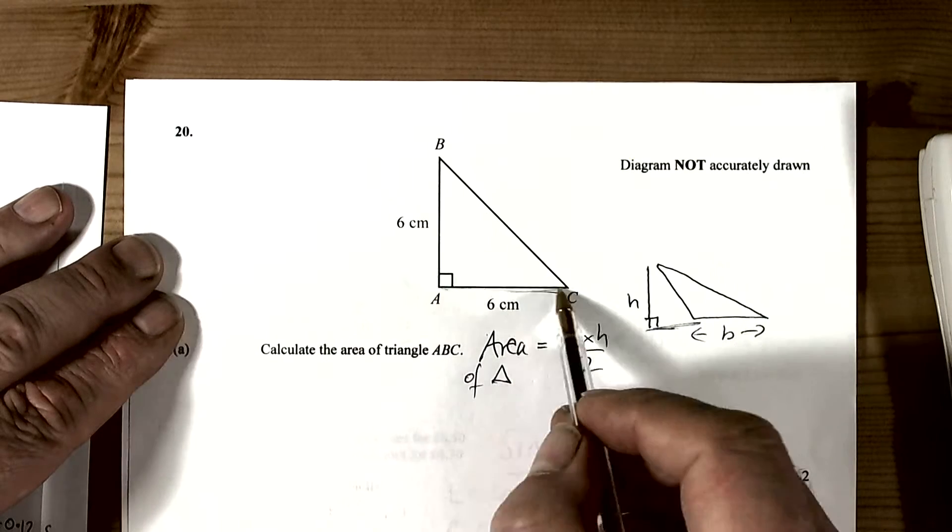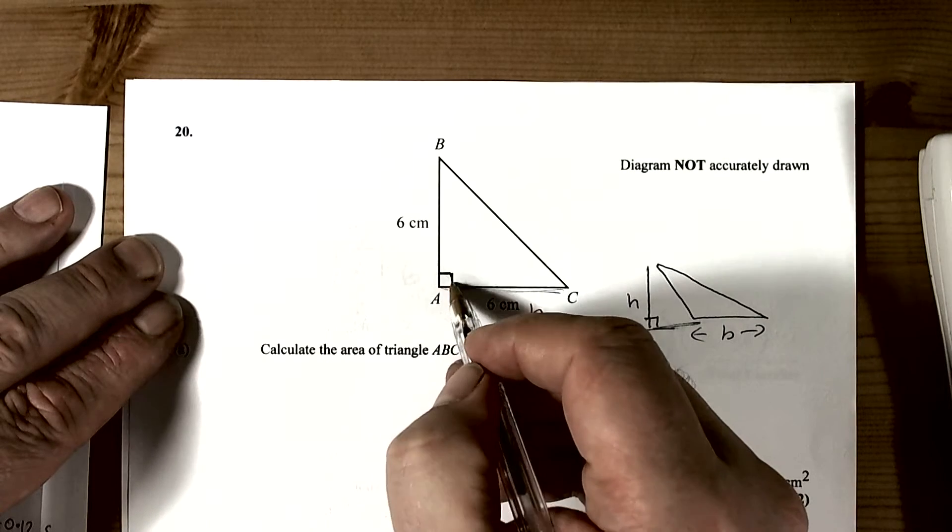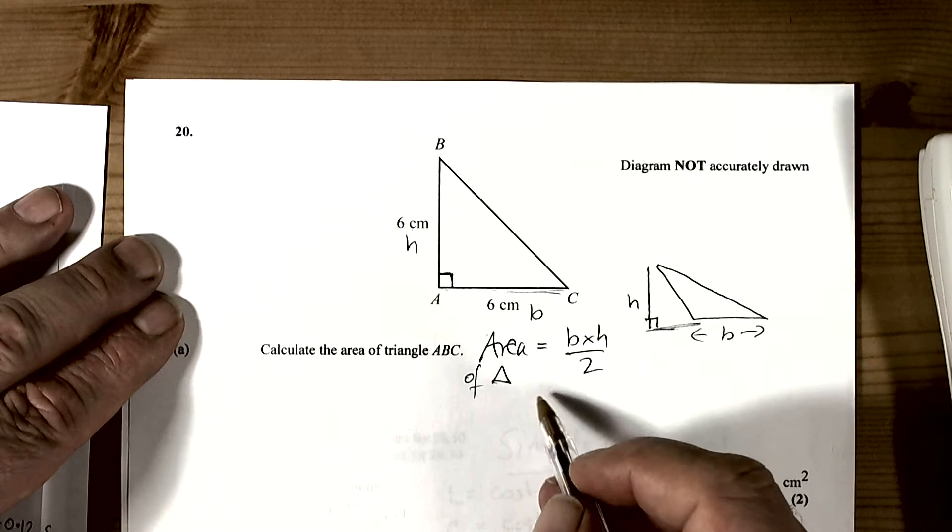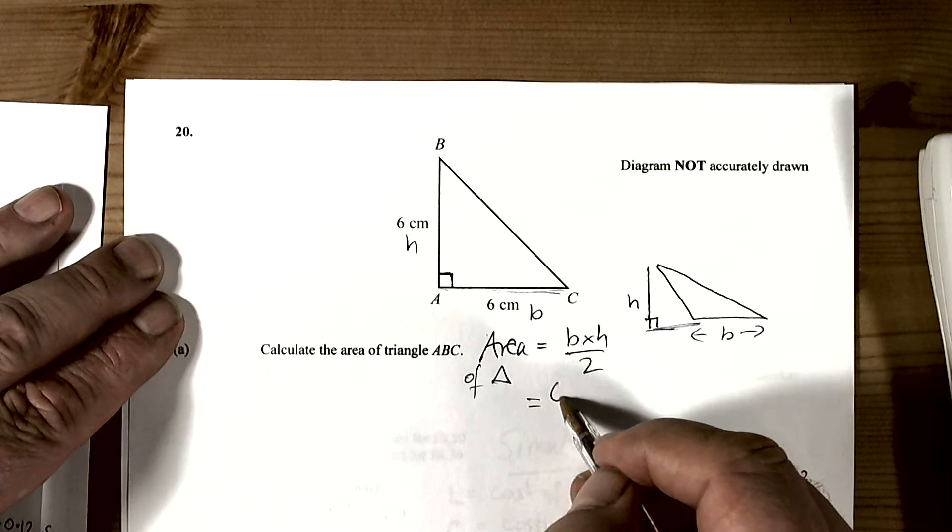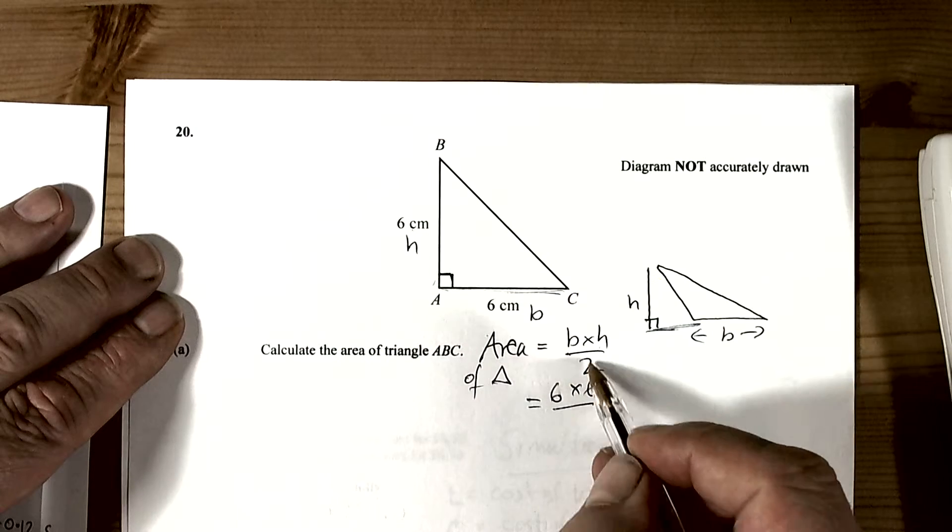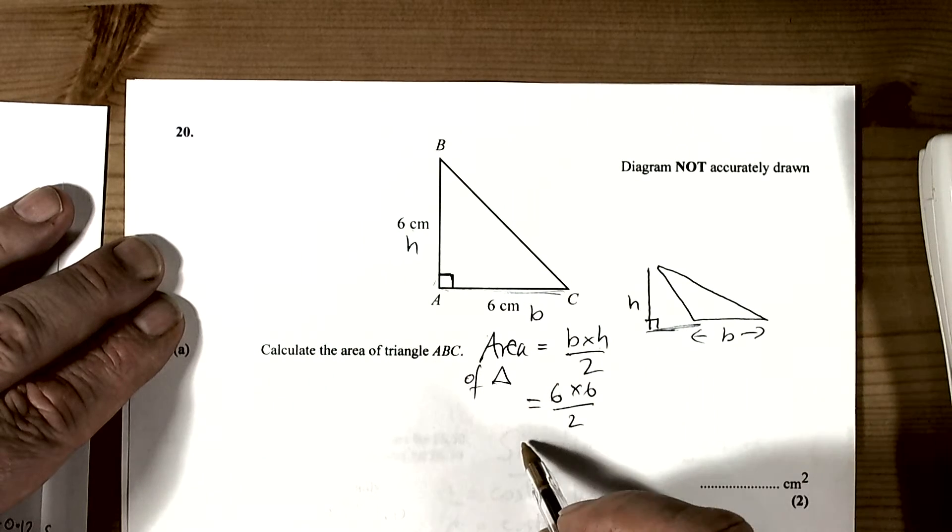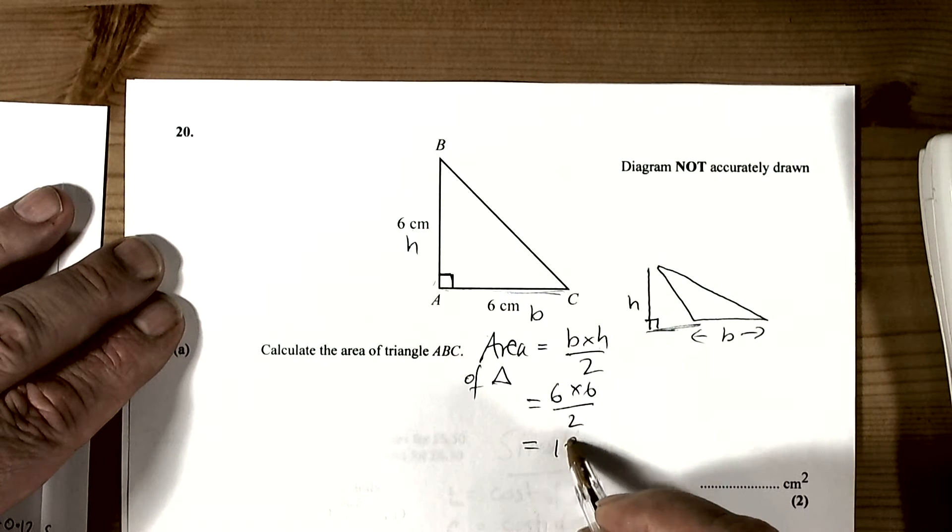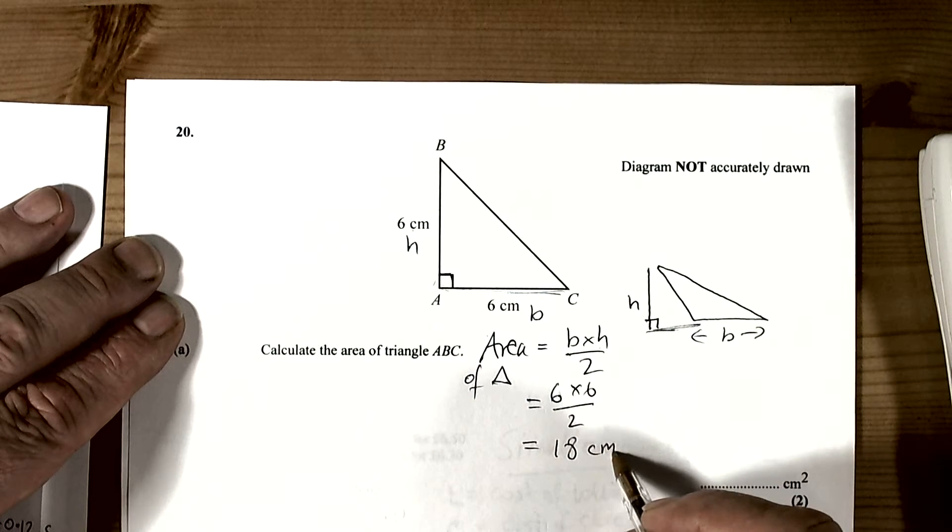So here we've got a base length, and here we've got a right angle, so the perpendicular height is the height there. We can follow the formula: the base length was 6, the height was 6 as well, and then we're dividing by 2 to get the actual area of the triangle. 6 times 6 is 36, half of that is 18.